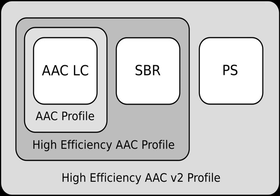High-efficiency advanced audio coding (HE-AAC) is an extension of AAC-LC using spectral band replication (SBR) and parametric stereo (PS). It is designed to increase coding efficiency at low bitrates by using partial parametric representation of audio.